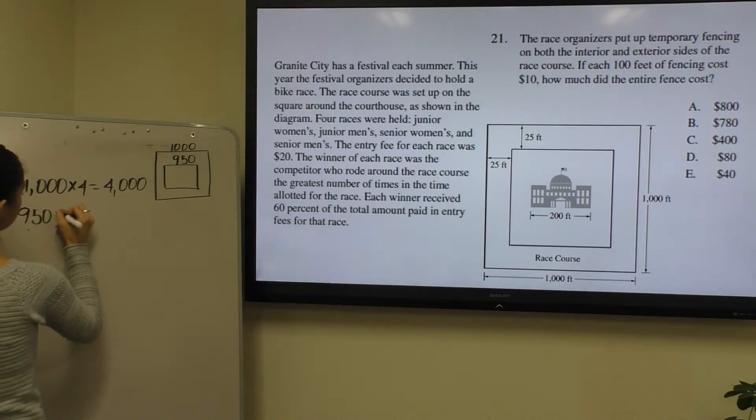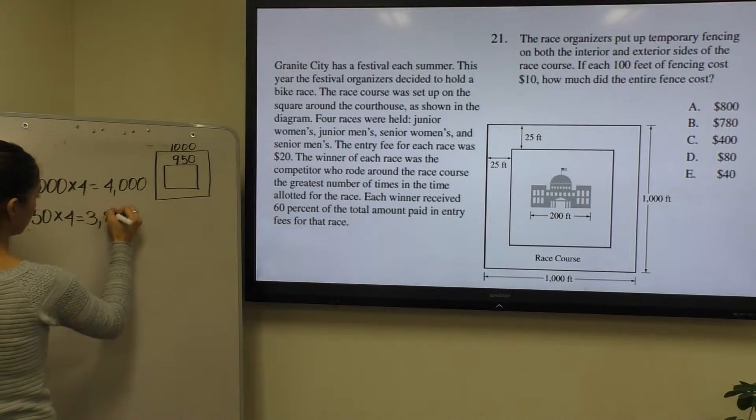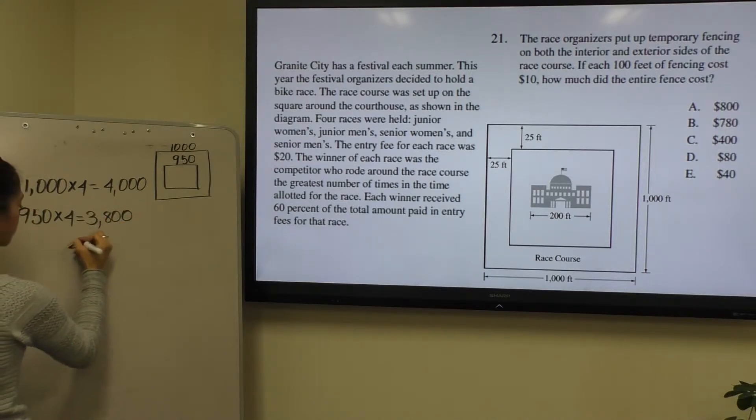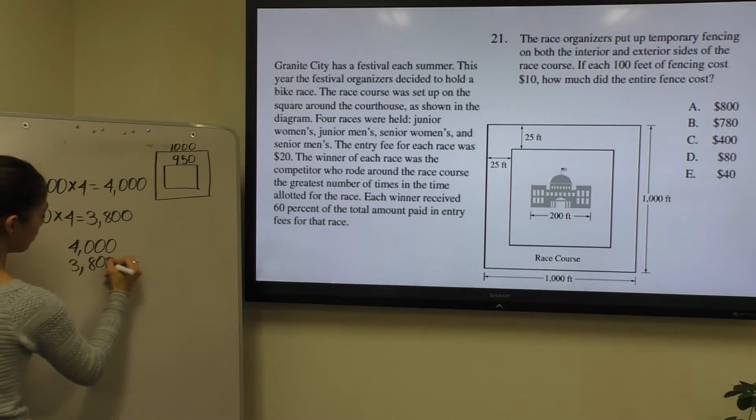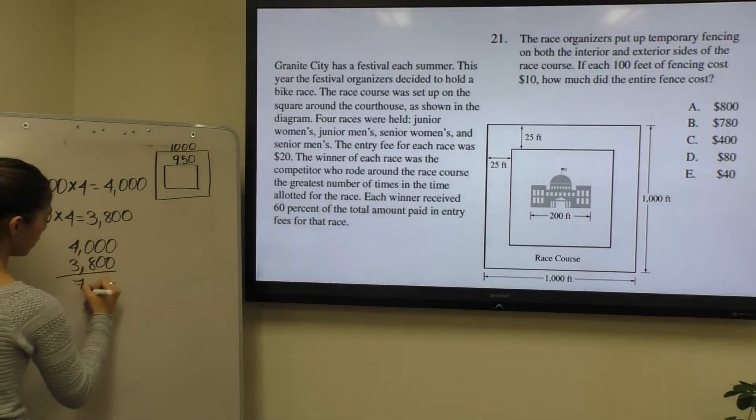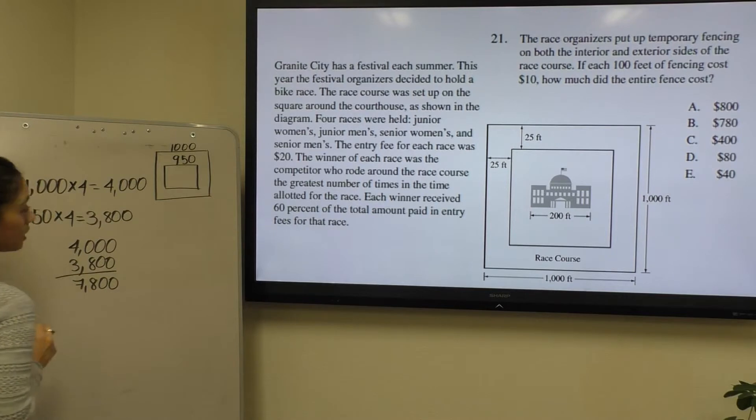And the fencing for the small square would be 950 times 4, which would give 3800. Now combined, this gives us a total amount of fencing of 7800.